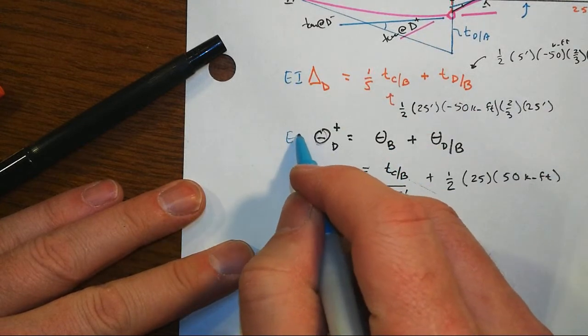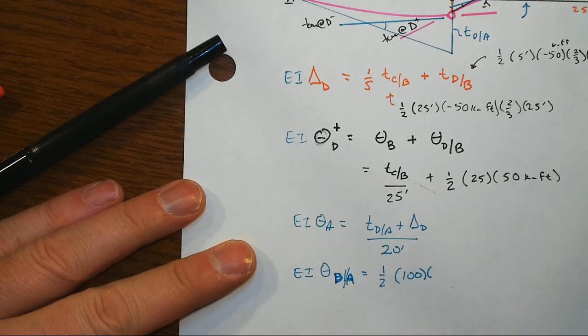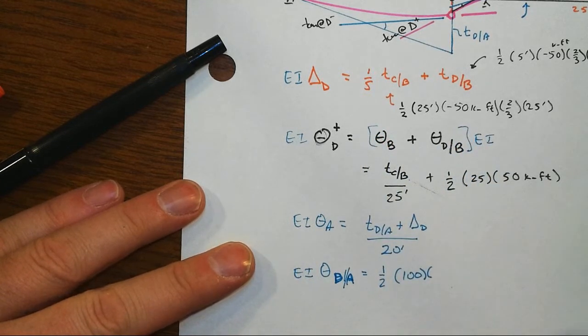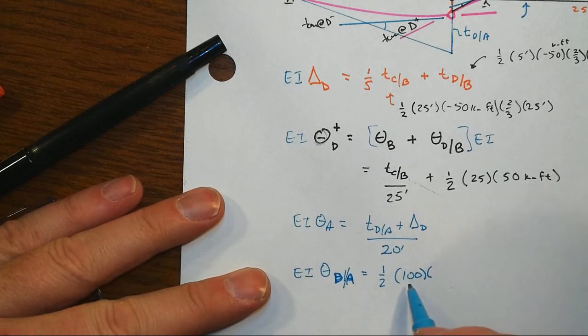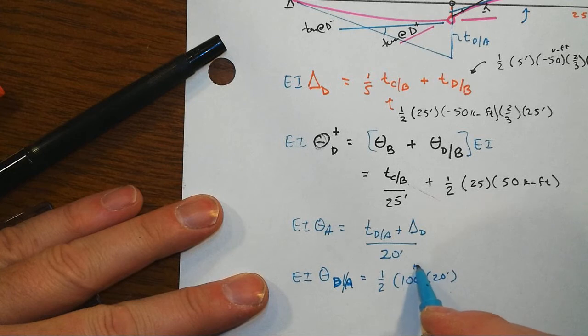And so a little clever way to handle that EI business. So let's go back one-half, 100 times the 20 feet. That would be, that's 100 kip foot. And so that would be, well, that's an easy one. That's 1,000 kip foot squared.